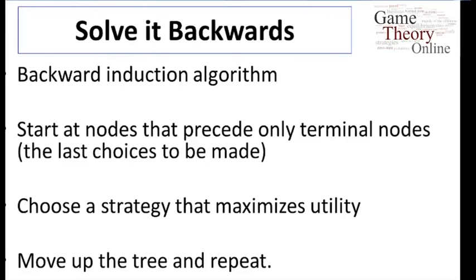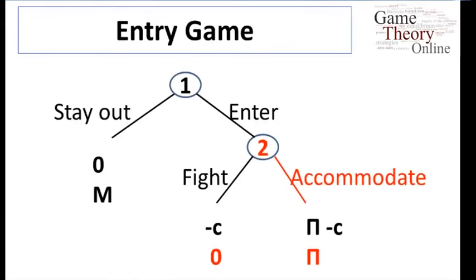So we're just solving the game, literally just unfolding it backwards up the tree. What do we end up with in this particular structure?